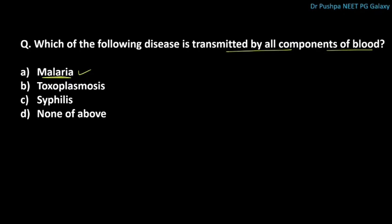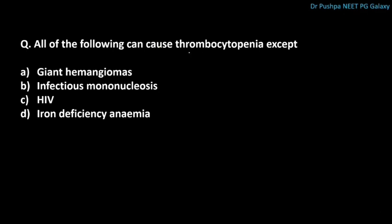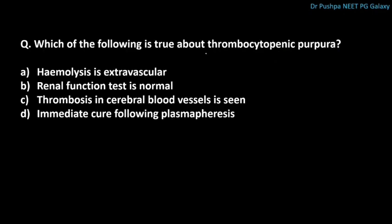What is the major source of von Willebrand factor? The correct answer is endothelial cells. Which of the following can cause thrombocytopenia? Iron deficiency anemia cannot cause thrombocytopenia. Which of the following is true about thrombocytopenic purpura? The correct answer is that thrombosis in the cerebral blood vessels is seen.